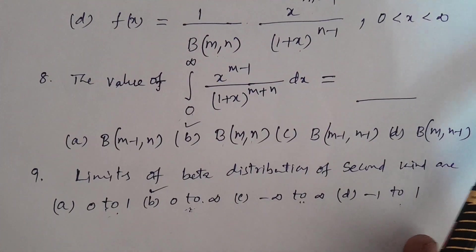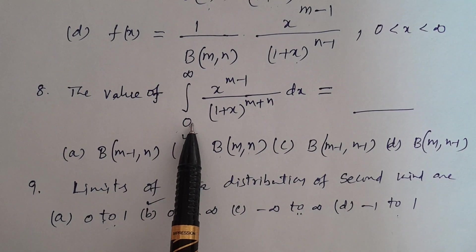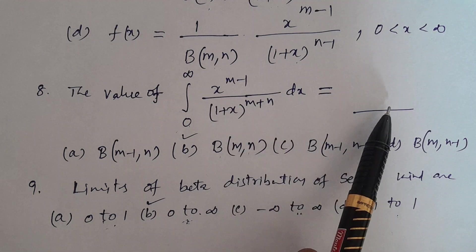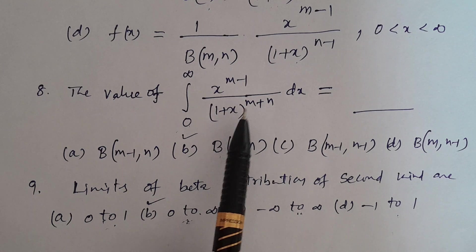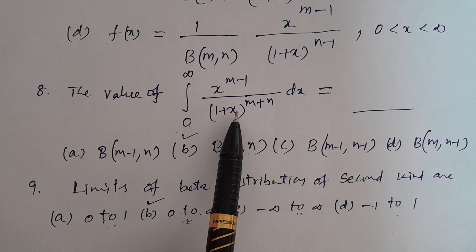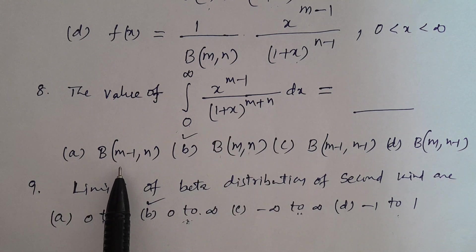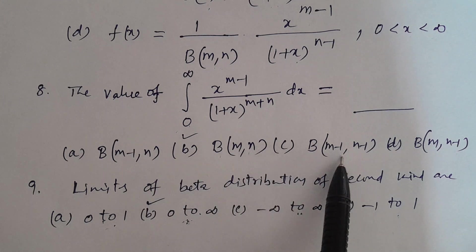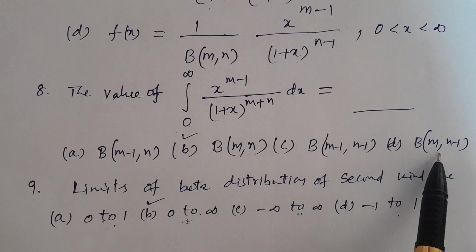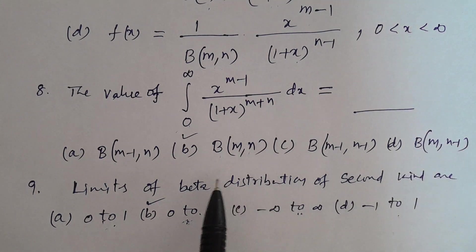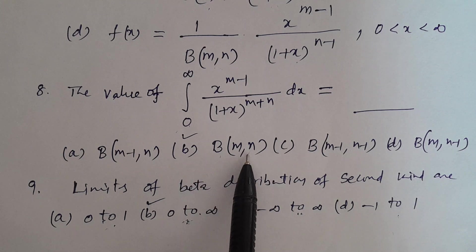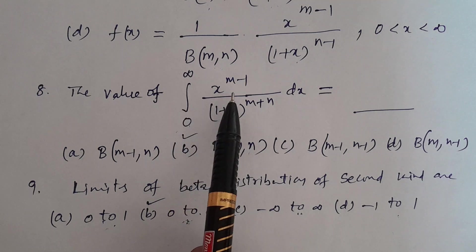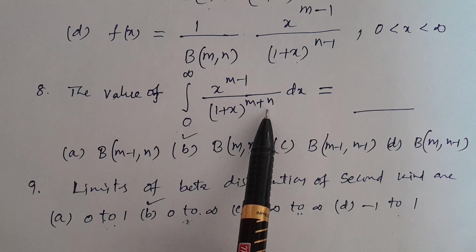Question number 8: The value of integral from 0 to ∞ of x^(m-1) / (1+x)^(m+n) dx is equal to. This is the beta distribution of second kind integral. Options: A — β(m-1, n); B — β(m, n); C — β(m-1, n-1); D — β(m, n-1). The correct answer is Option B: β(m, n).